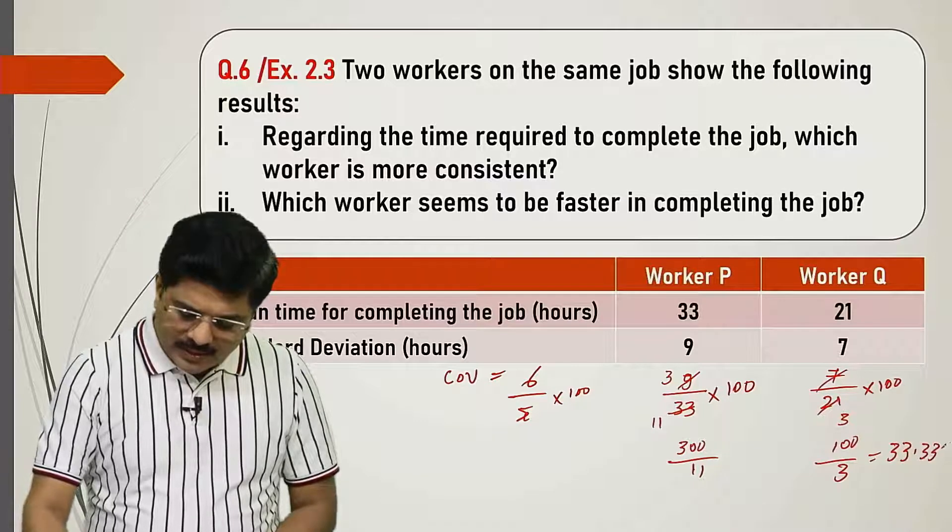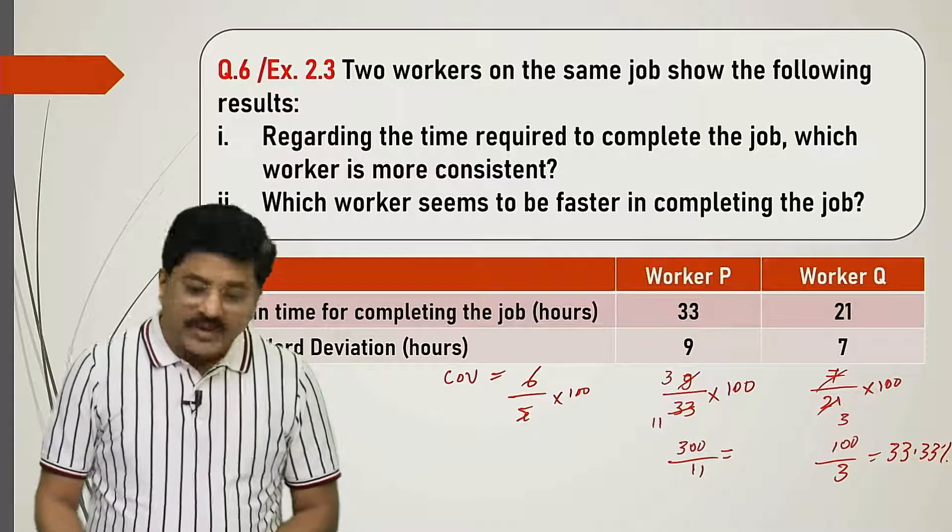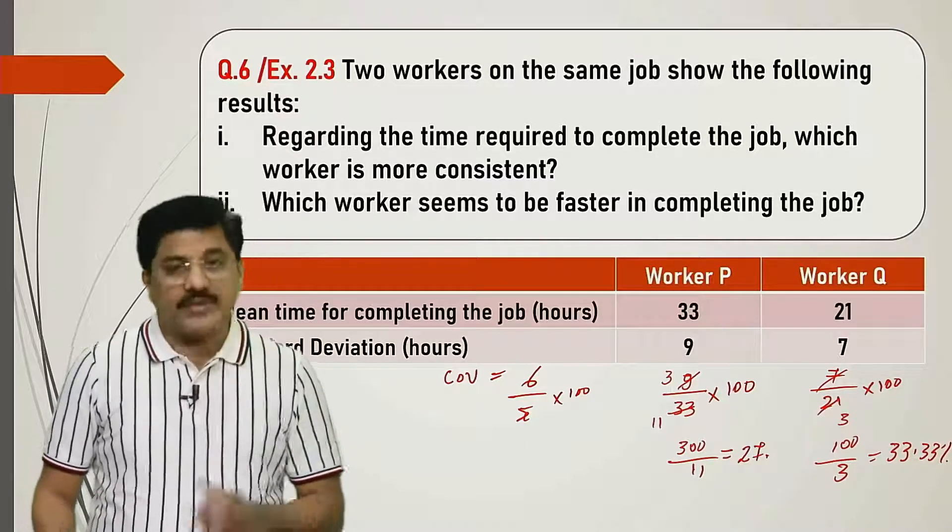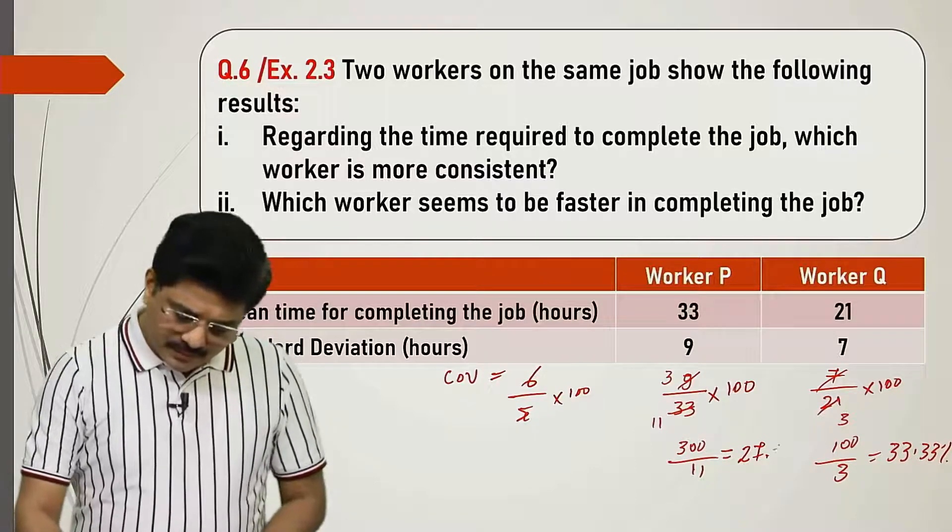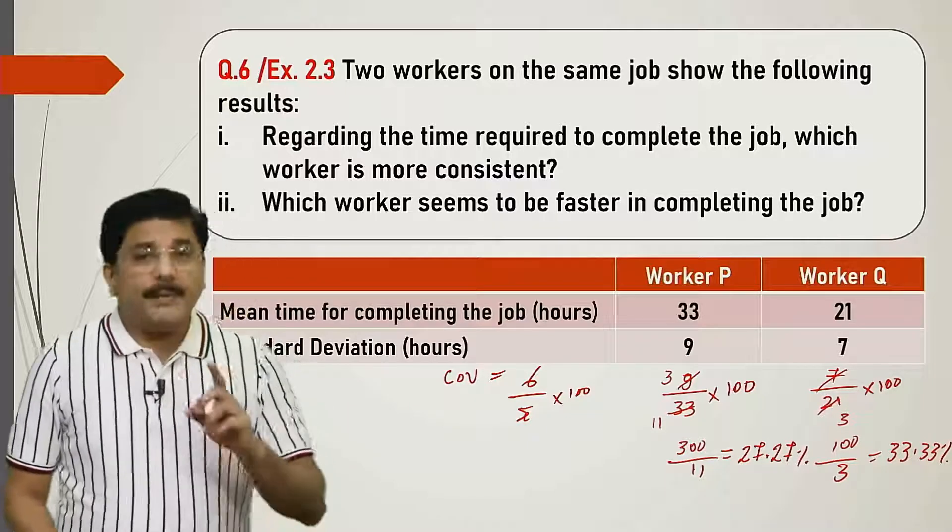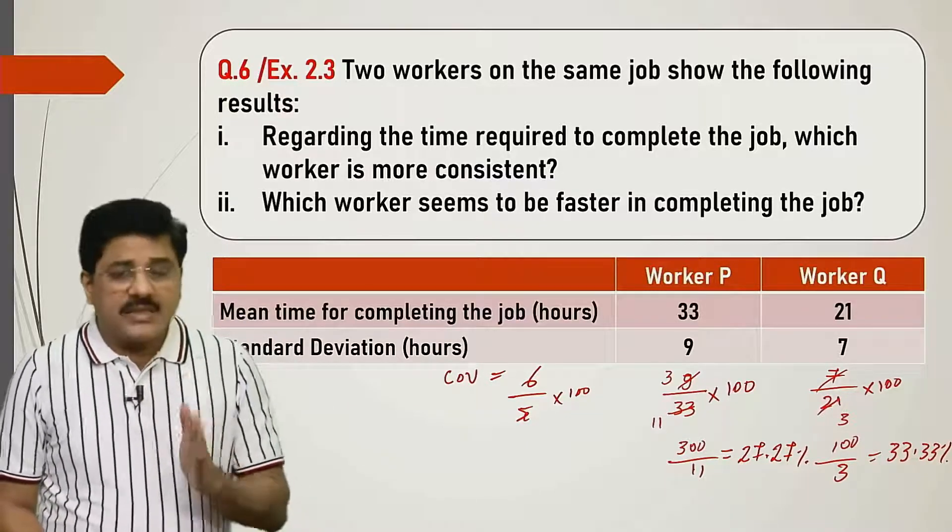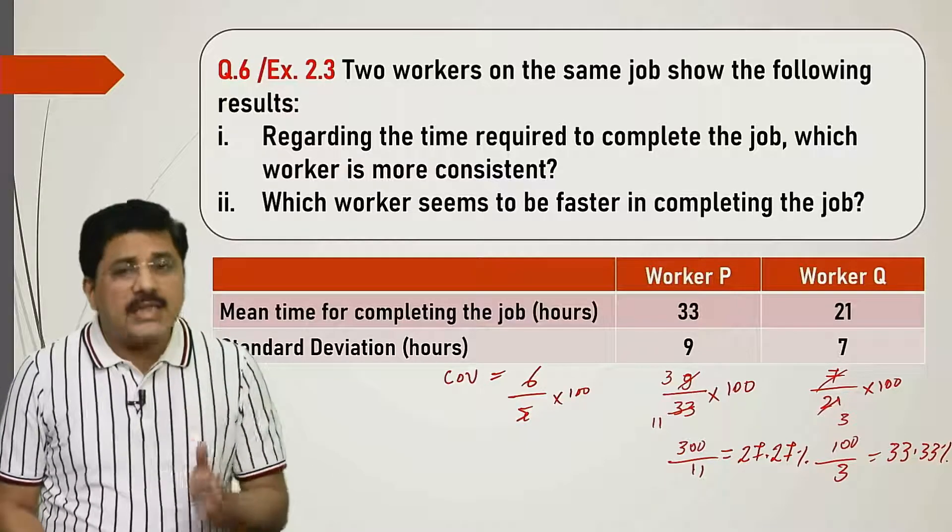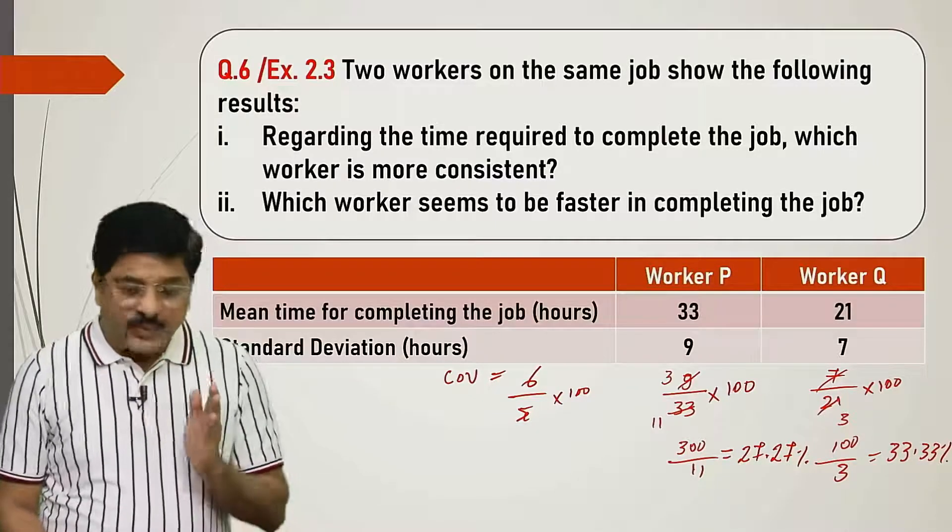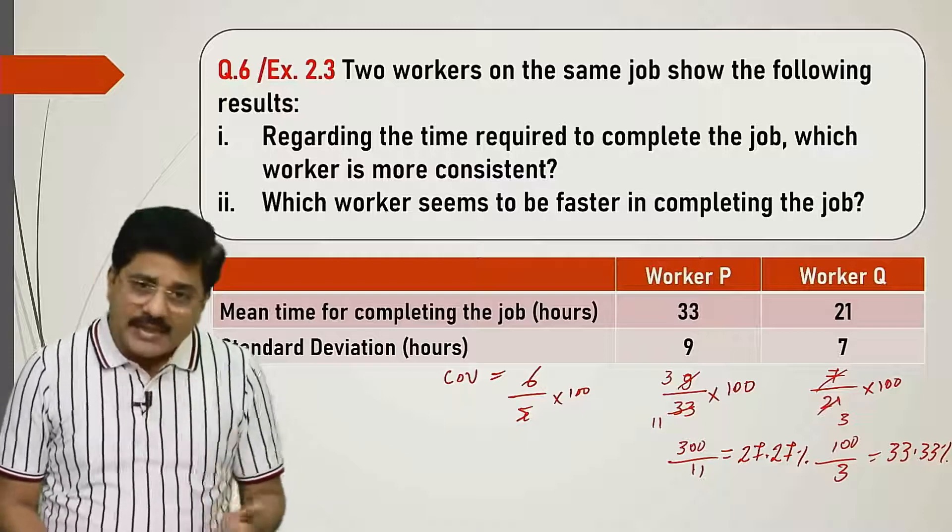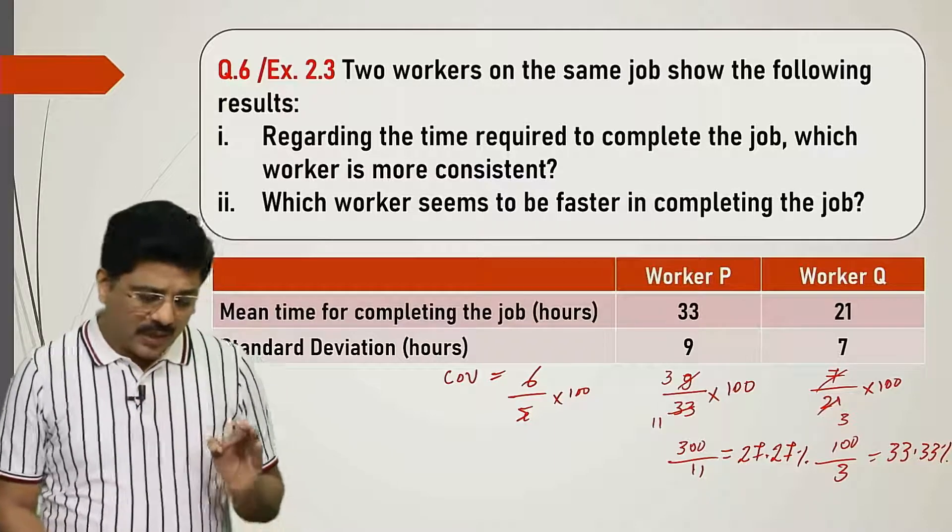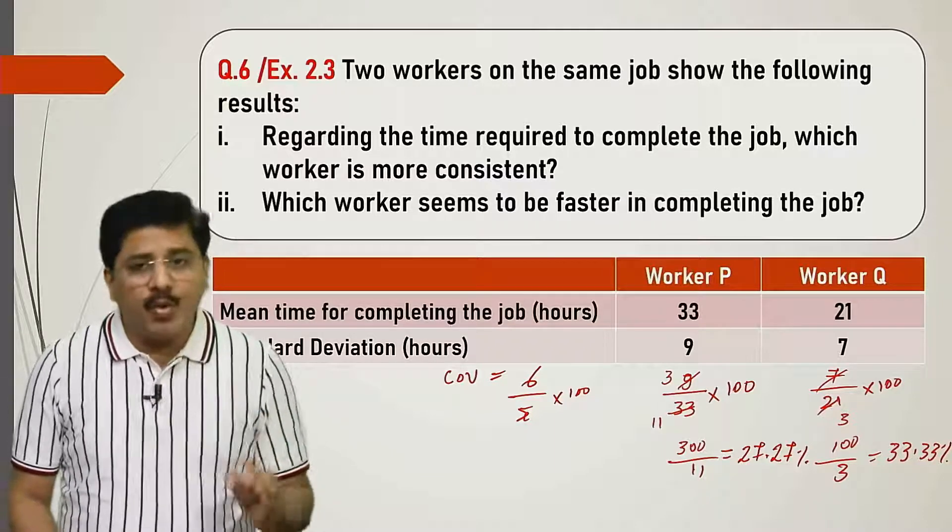P's standard deviation is 9 upon 33 into 100. Here, 7 upon 21 into 100. This gives 300 upon 11, which is 27.27 percent. And 100 upon 3 gives 33.33 percent. So CV of P, 27.27, is lesser than CV of Q, 33.33. Hence, worker P is more consistent.